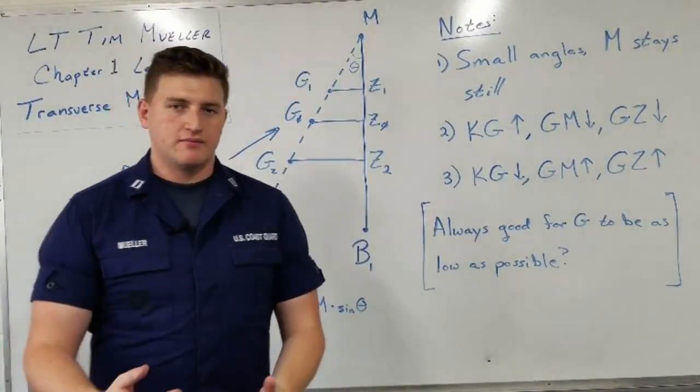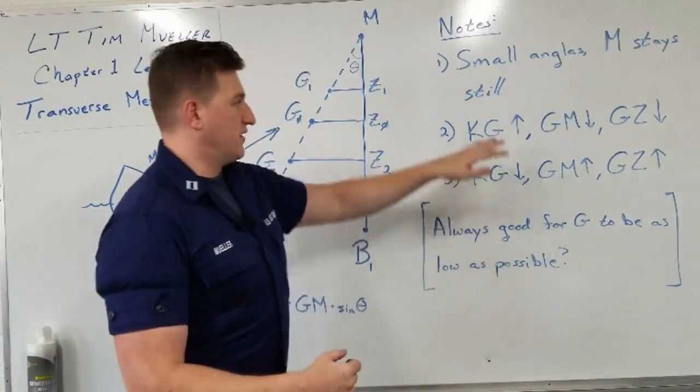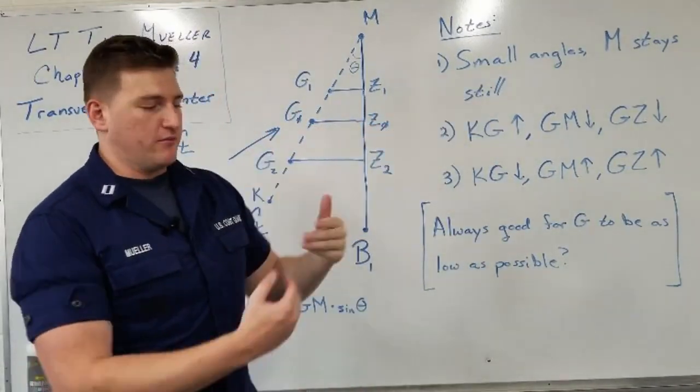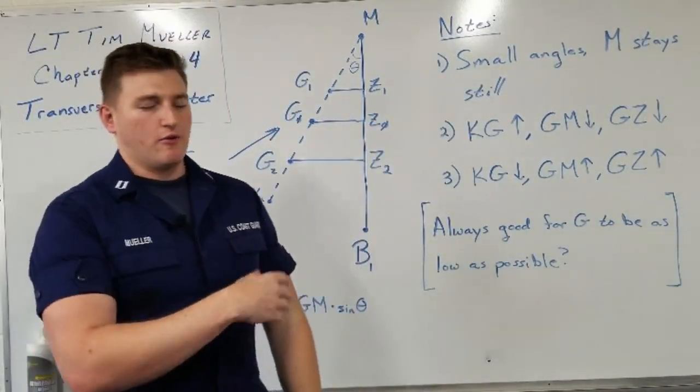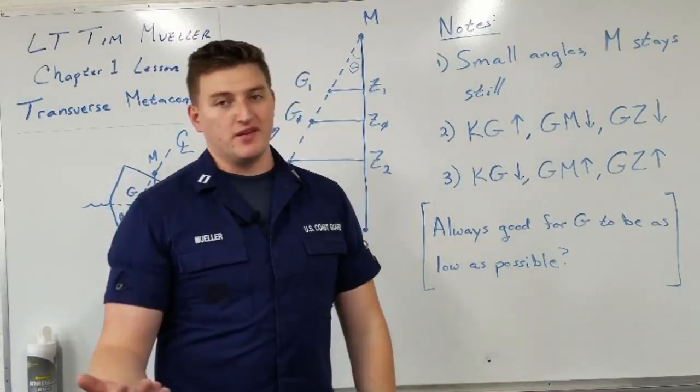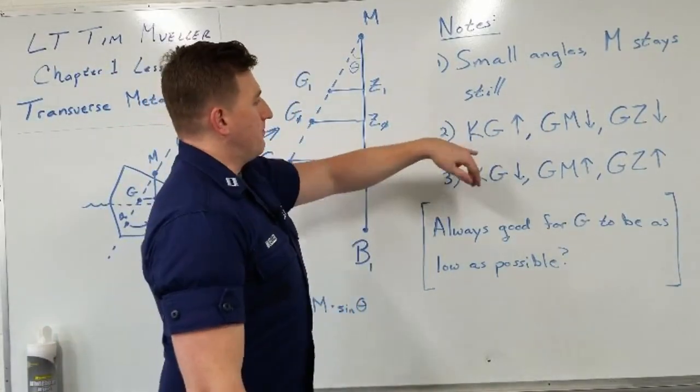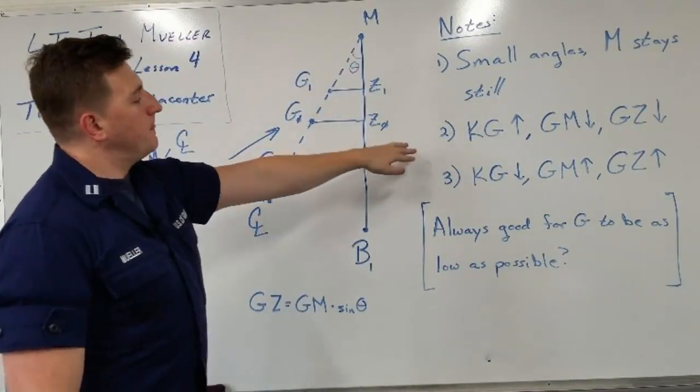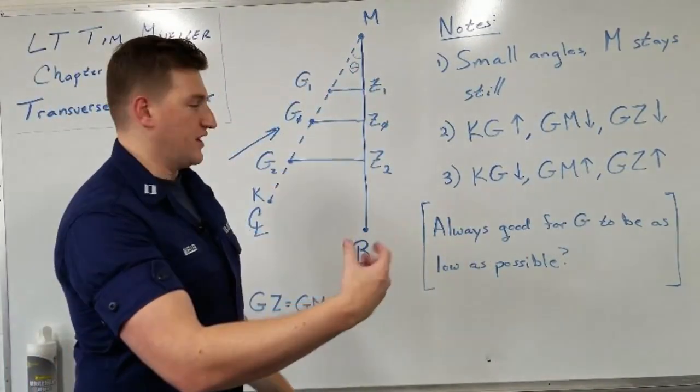A couple quick notes on the stability triangle here and everything I've talked about. One, small angles, the meta center stays still. Small angles being from 0 to 7 degrees, or depending on the hull shape, could be 0 to 10 degrees. But that meta center is always going to stay in the same spot, as long as you're in those small ranges.